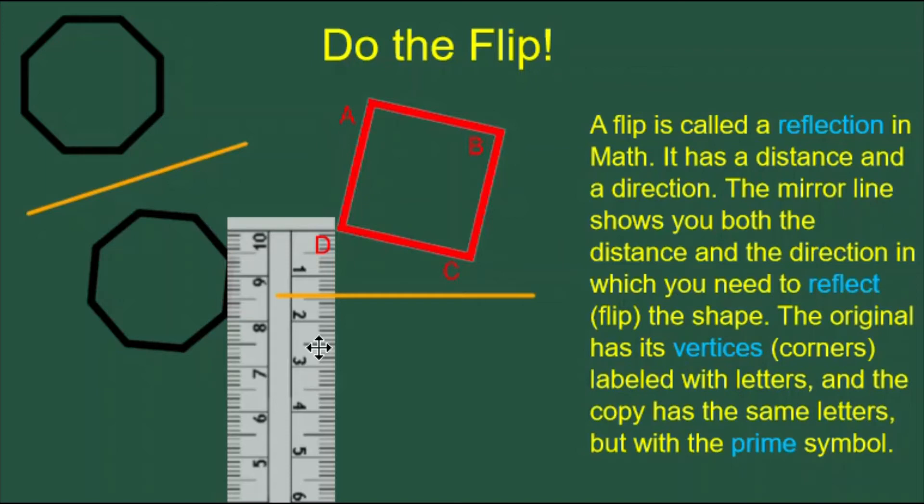And I'm going to put a reflection of that vertex on the opposite side. It will be the same distance from the mirror line as the original vertex, but on the opposite side.